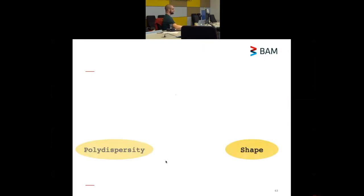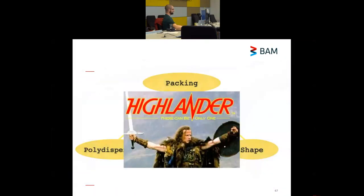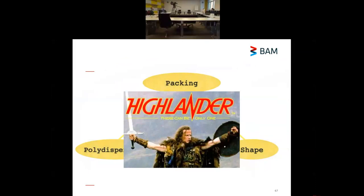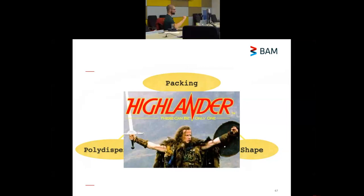So, just to highlight. Between shape, polydispersity, and packing, there can really be only one unknown between these three. So, think of the Highlander. There can be only one. You have to input the other two when you start fitting your data. So, if you want to know the polydispersity, the size distribution of the structure that you're measuring, you have to input information on the packing and the shape of these particles.